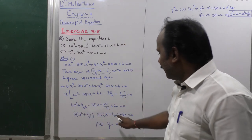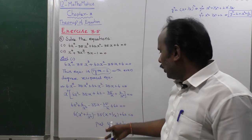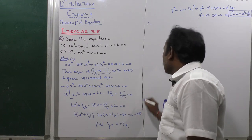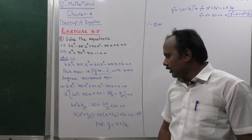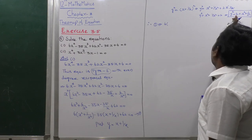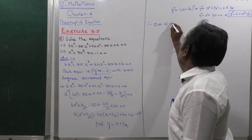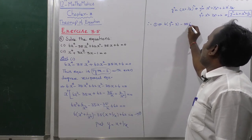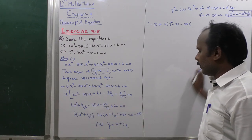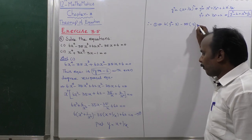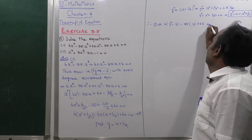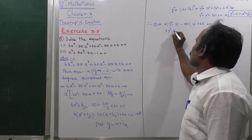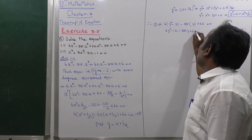So x² plus 1/x² is replaced by y² minus 2, and x plus 1/x is replaced by y. Therefore, equation number 1 becomes: 6(y² minus 2) minus 35y plus 62 equals 0. Expanding inside: 6y² minus 12 minus 35y plus 62 equals 0.